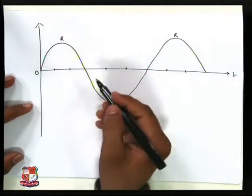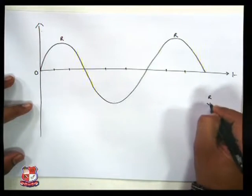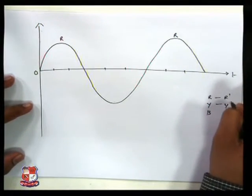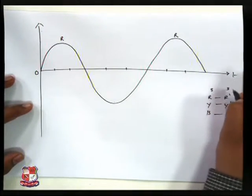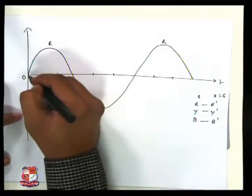Two equal parts. Now whenever you are talking about the sixth phase, then there is your R, Y, B. So same R dash, Y dash, and B dash. So 3 plus 3 that becomes your sixth phase.